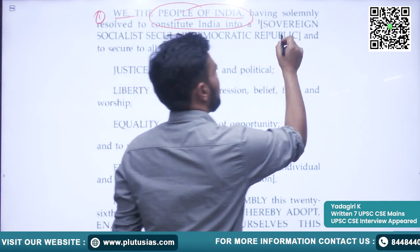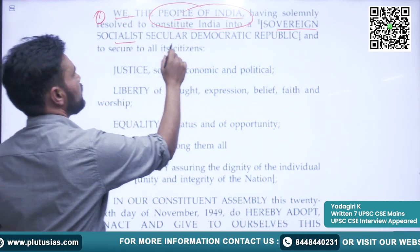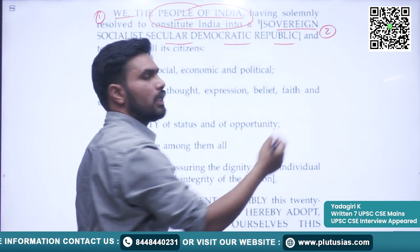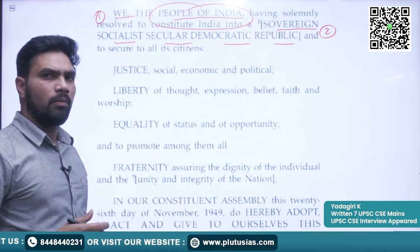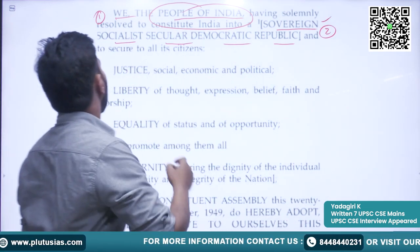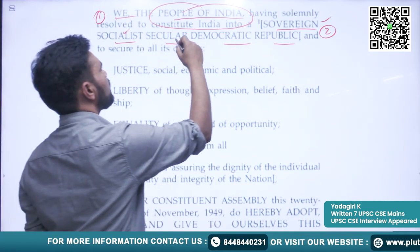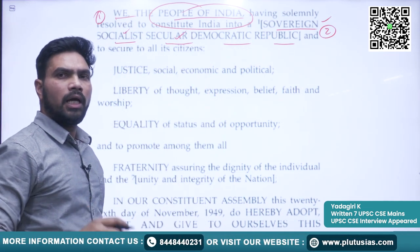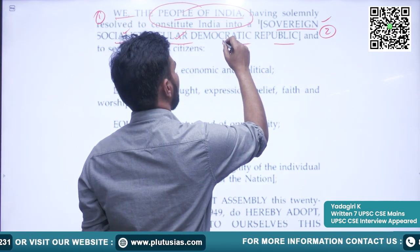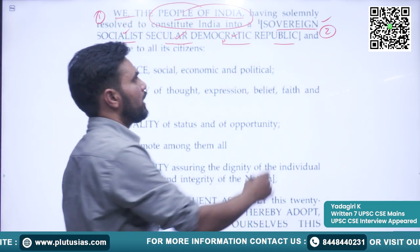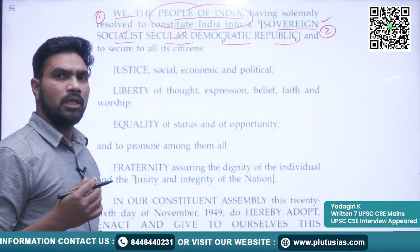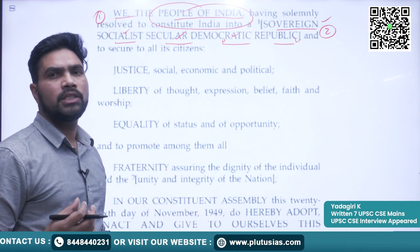The second phrase is 'sovereign, socialist, secular, democratic and republic.' This phrase tells us the nature of the Indian state — what kind of state India is. We have a sovereign state, a socialist state, a secular state, where religion and state affairs are separated, a democratic state, and a republic state. These five words basically tell us the nature of the Indian state.